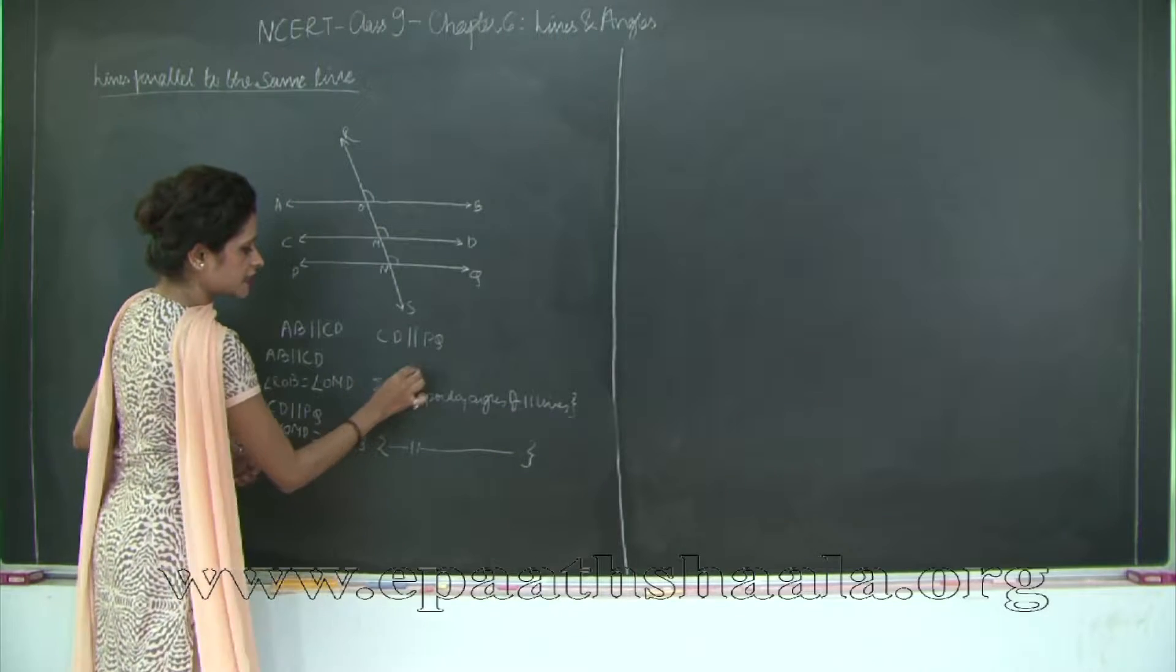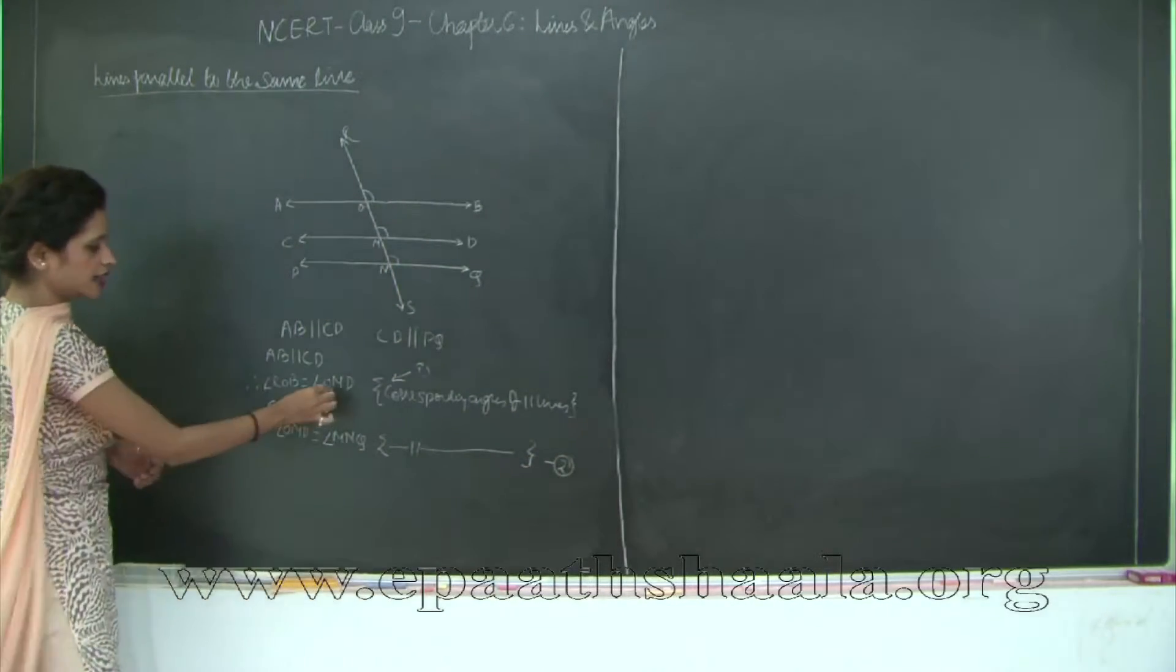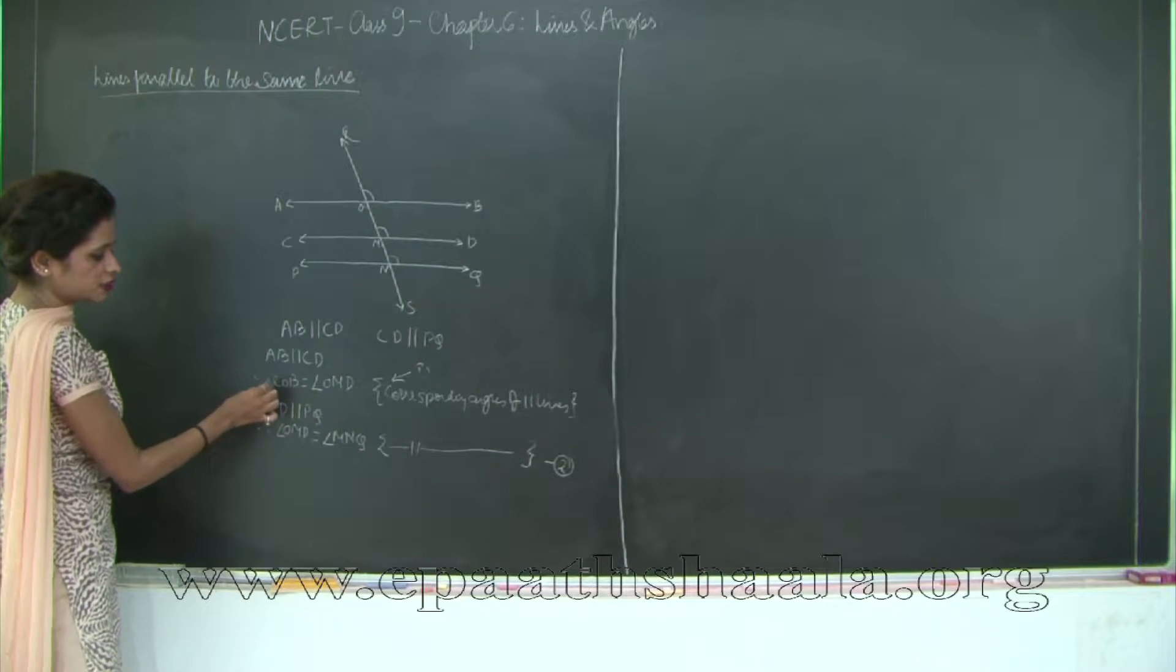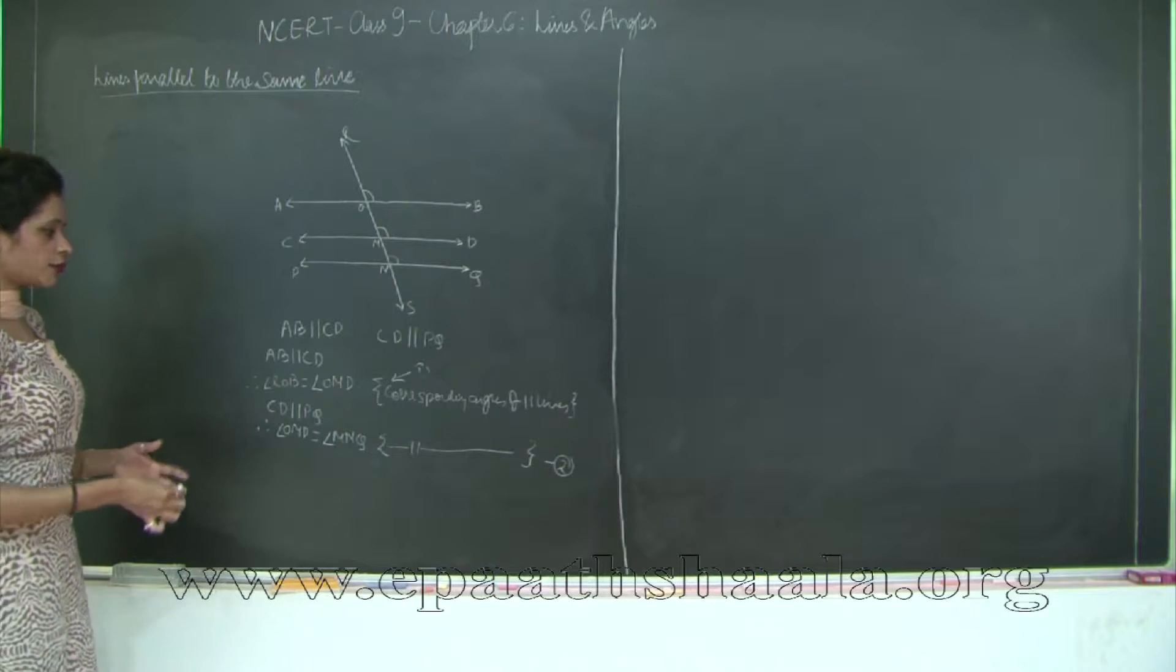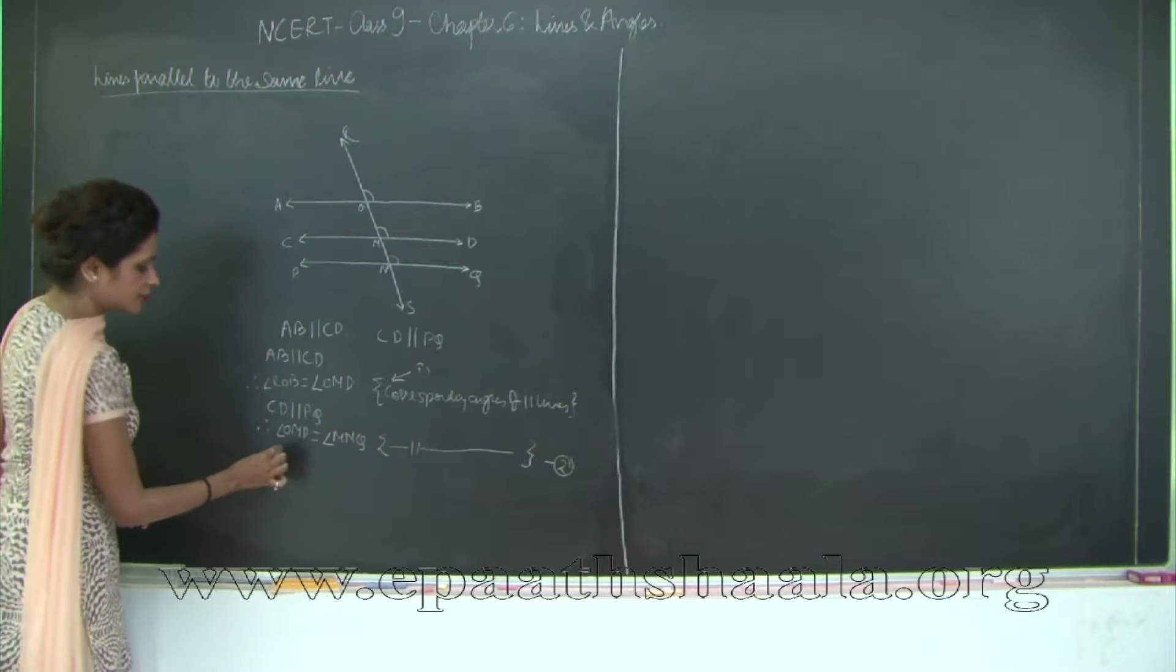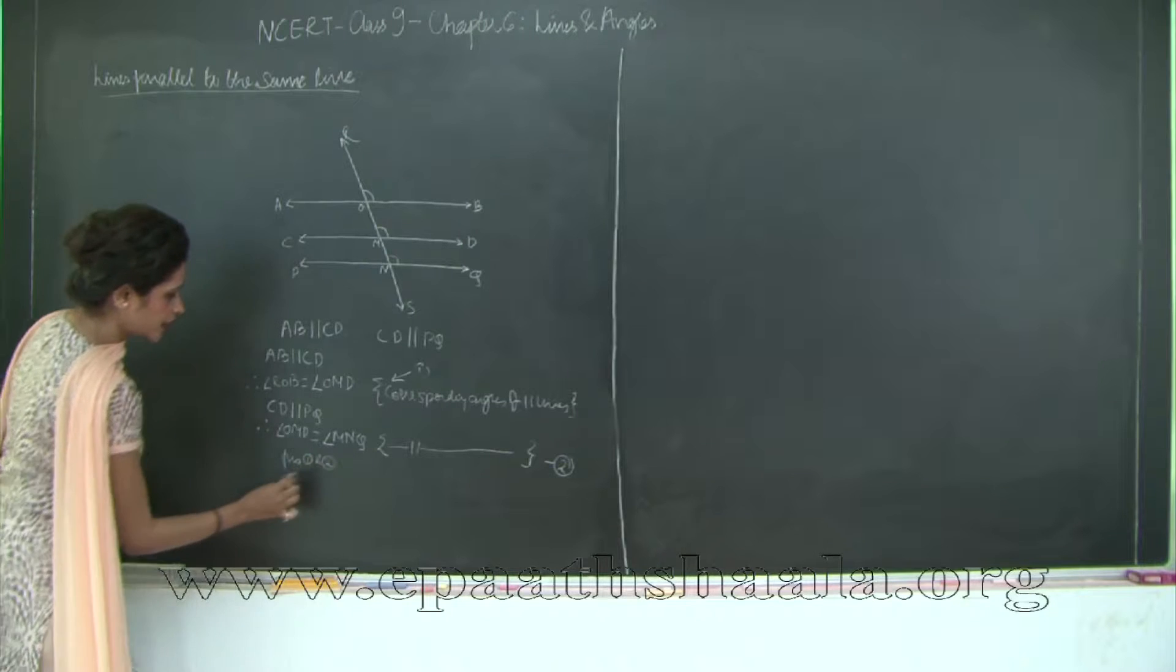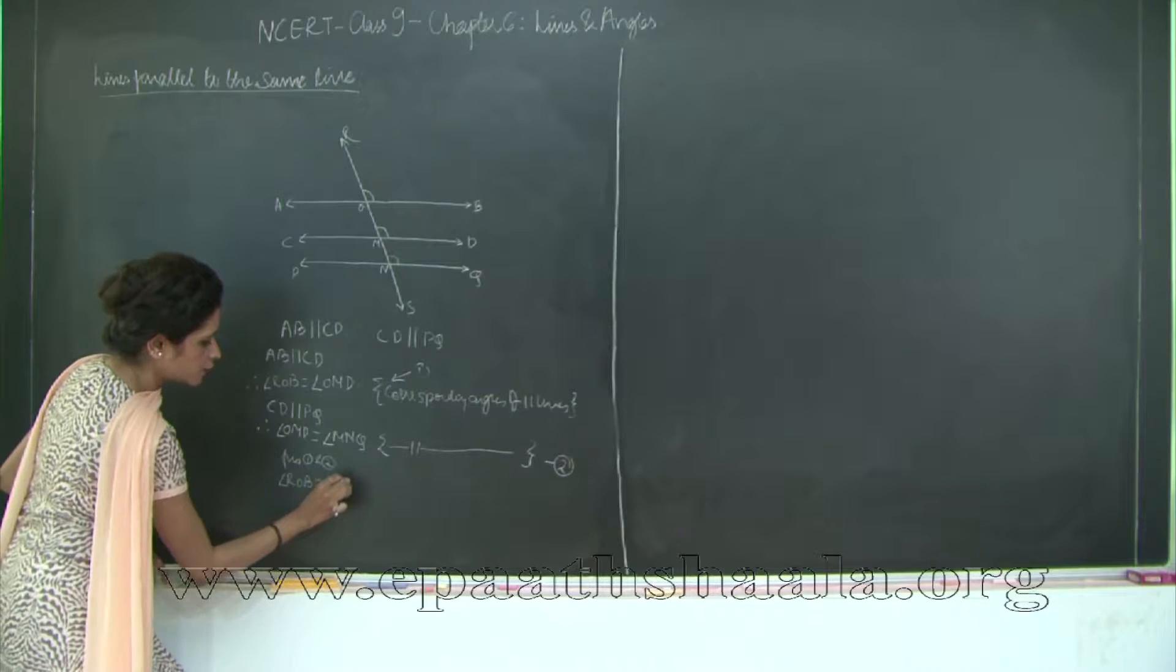I will mark this statement as 1 and this statement as 2. What do you see? OMD is equal to ROB and OMD is equal to MNQ. Therefore, according to Euclid's geometry, equals that are equal to the same thing are equal. Therefore, from 1 and 2, angle ROB is equal to angle MNQ.